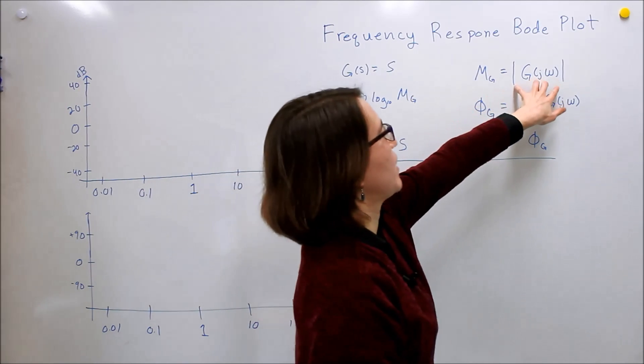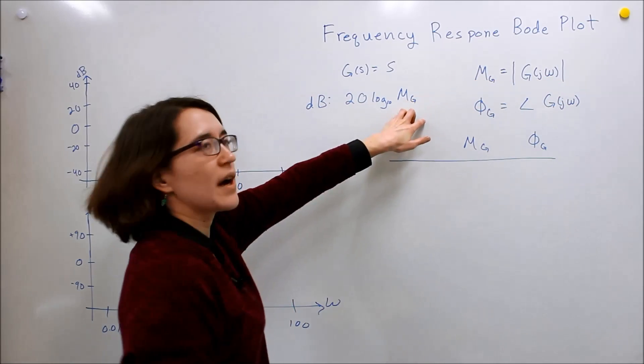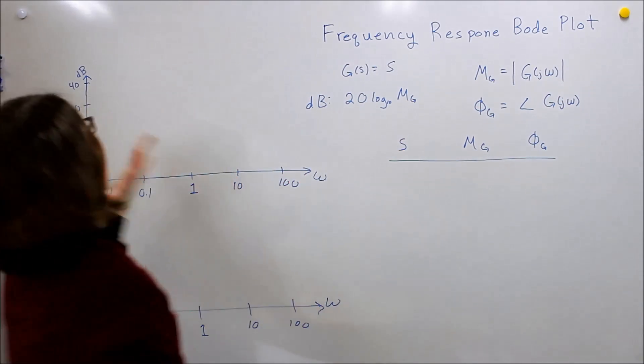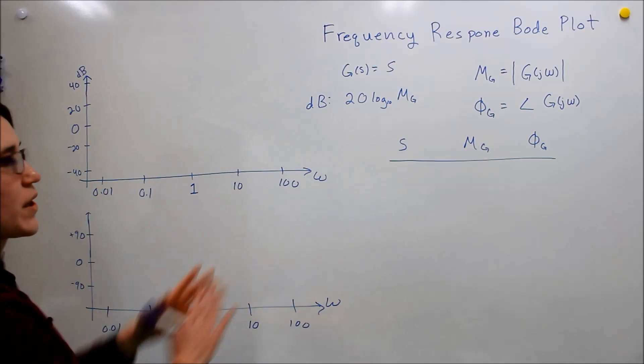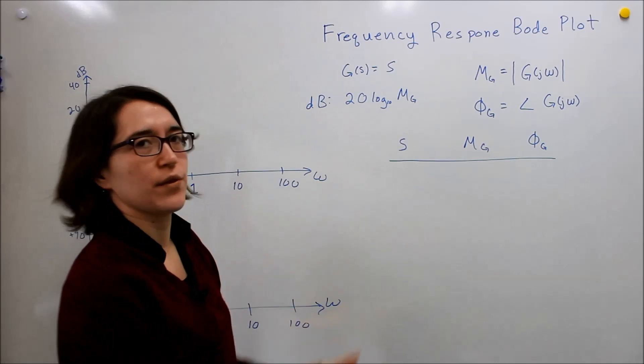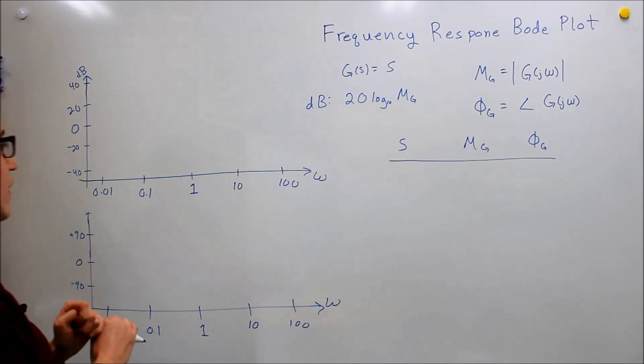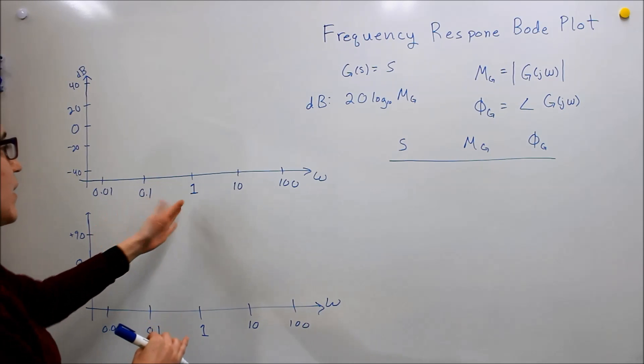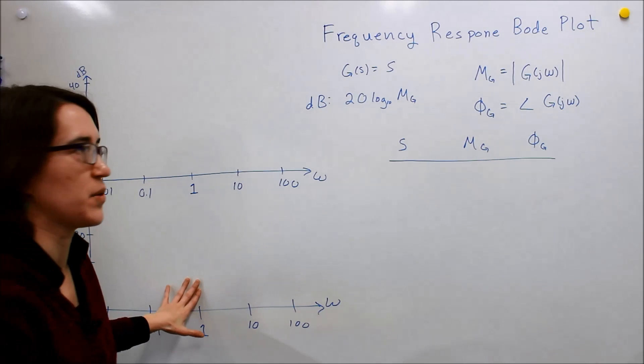Whatever the value is, you take the log of it, multiply it by 20, and plot it. We're going to take this example and plot all of those values. Let's take the first point - it's one of the simpler points.